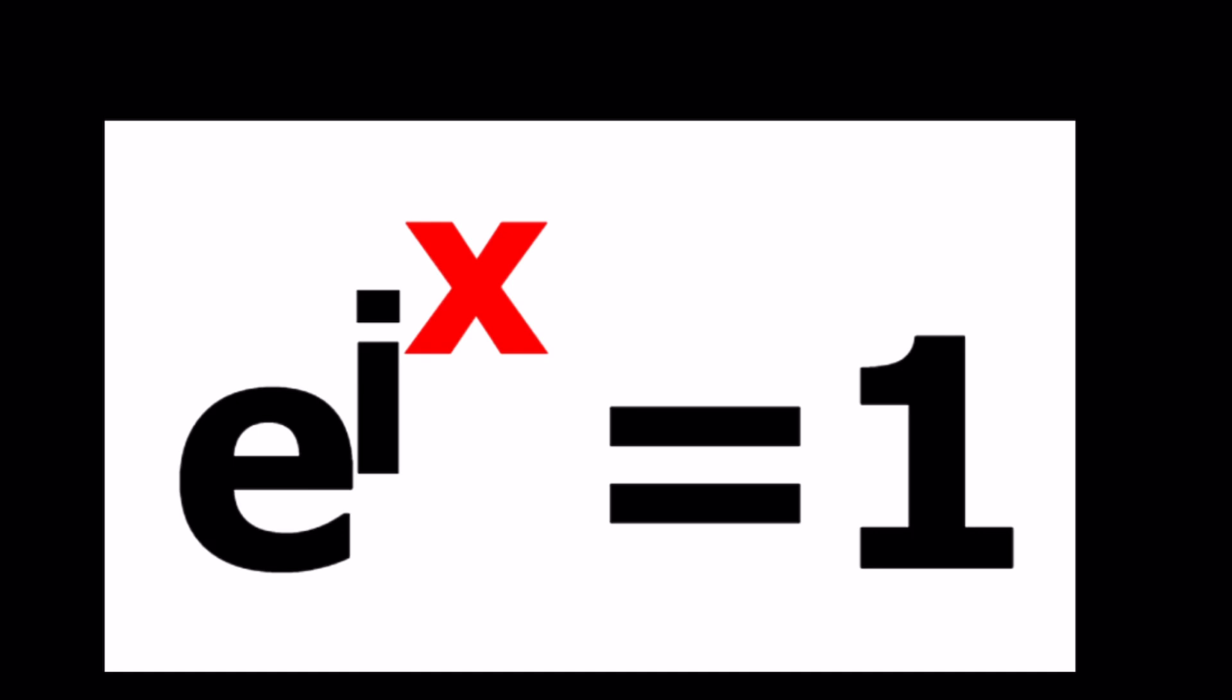Now, to be able to solve this problem, first of all, let's observe a couple things. For example, e to the power something equals 1 means what? If you had an equation like e to the power n equals 1, you would probably think of 0, right? n equals 0 satisfies this equation.